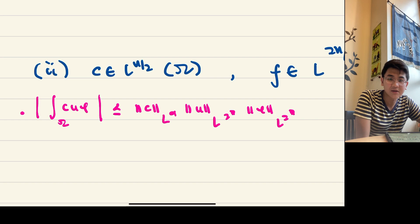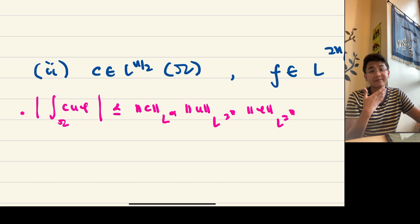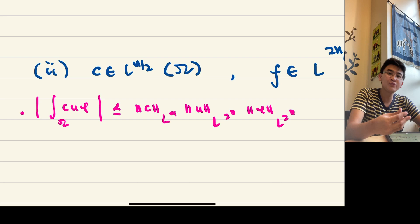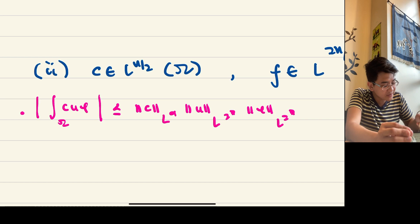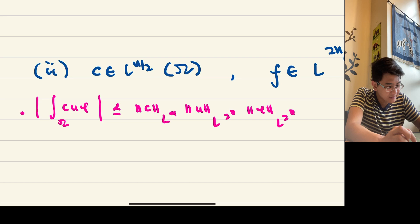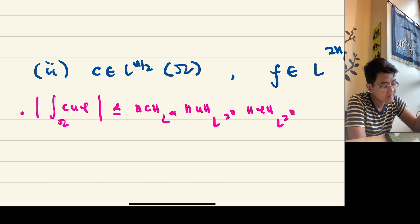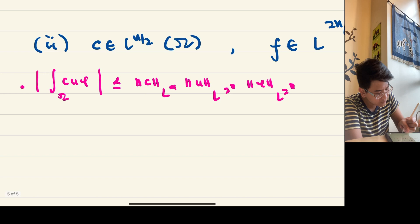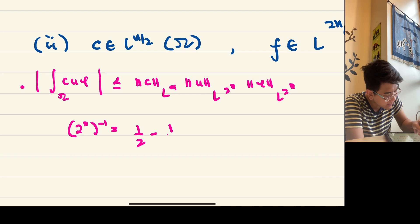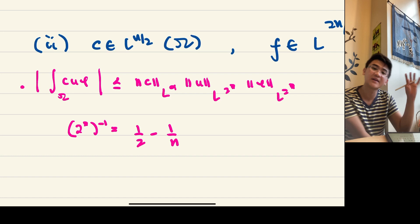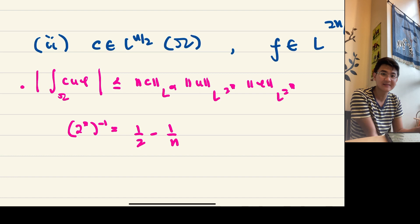The Sobolev exponent 2* comes from the Sobolev inequality: being in a Sobolev space gives better integrability. For W^{1,2}, functions are not just L^2 but actually integrable to a higher power. For n > 2 and p = 2, we're in the case p < n, and 2* satisfies 1/(2*) = 1/2 − 1/n, giving 2* = 2n/(n−2). From Hölder's inequality, requiring the reciprocals of the exponents to sum to one gives alpha = n/2. So the minimum integrability assumption on C is L^{n/2}.